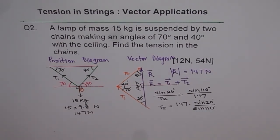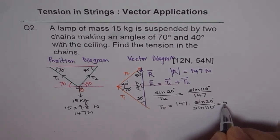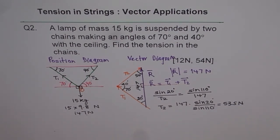Using a calculator: 147 times sine of 20 degrees, divided by sine of 110 degrees, equals 53.5 Newtons. So that is the answer for T2.